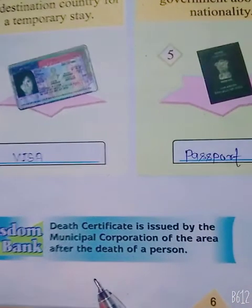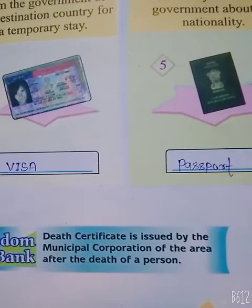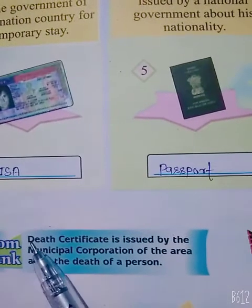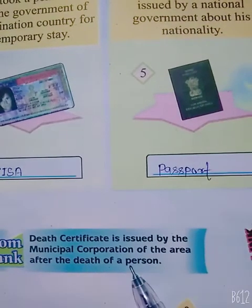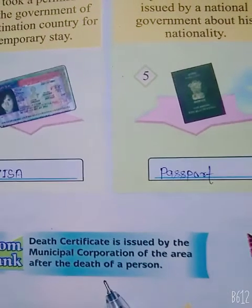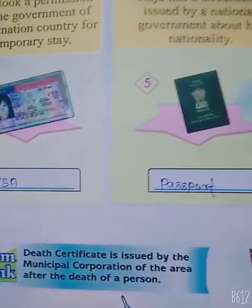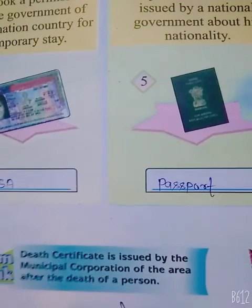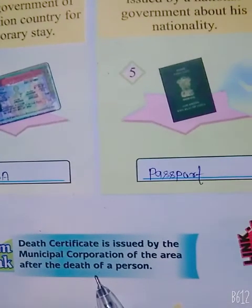Ye question hai, bachho — yeh wisdom bank hai, iske baare mein bhi hum jaan lete hain. Death certificate. Look here. Death certificate is issued by the Municipal Corporation of the area after the death of a person. Kisi vyakti ki mrityu ke baad, kshetra ke nagar nigam dwara mrityu pramaan patr jaari kiya jaata hai. So, thanks for today.